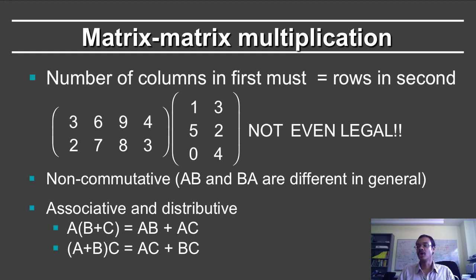Matrix multiplication is not commutative. If I reverse the order of the matrices here, it's not even a legal operation. The number of columns in the first matrix in this case is 4, the number of rows in the second in this case is 3, and it's not commutative. Even if the matrices actually have dimensions that they can be multiplied, it's still not commutative. However, matrix multiplication is associative and distributive, so A times (B plus C) is equal to AB plus AC, (A plus B) times C is equal to AC plus BC.